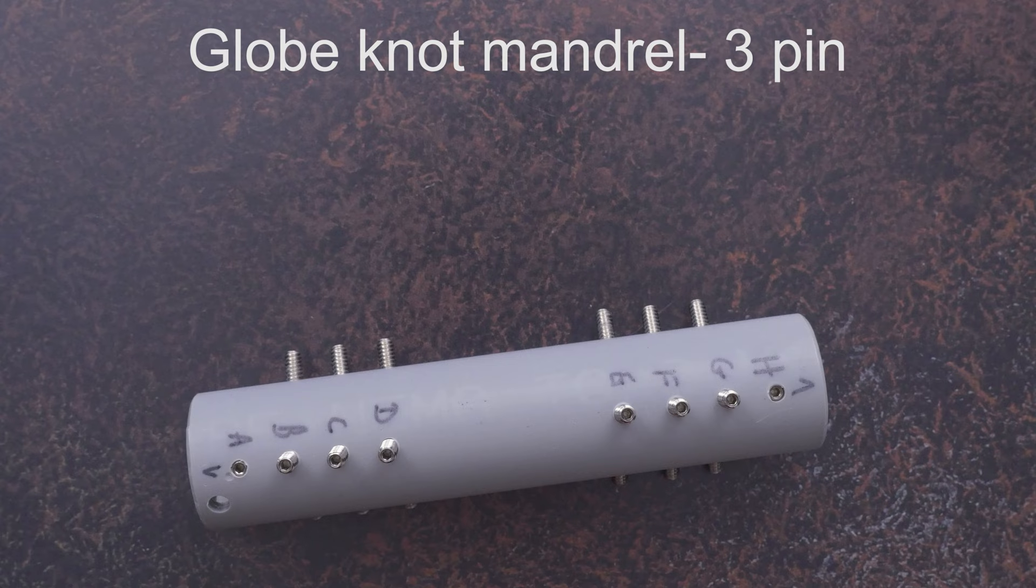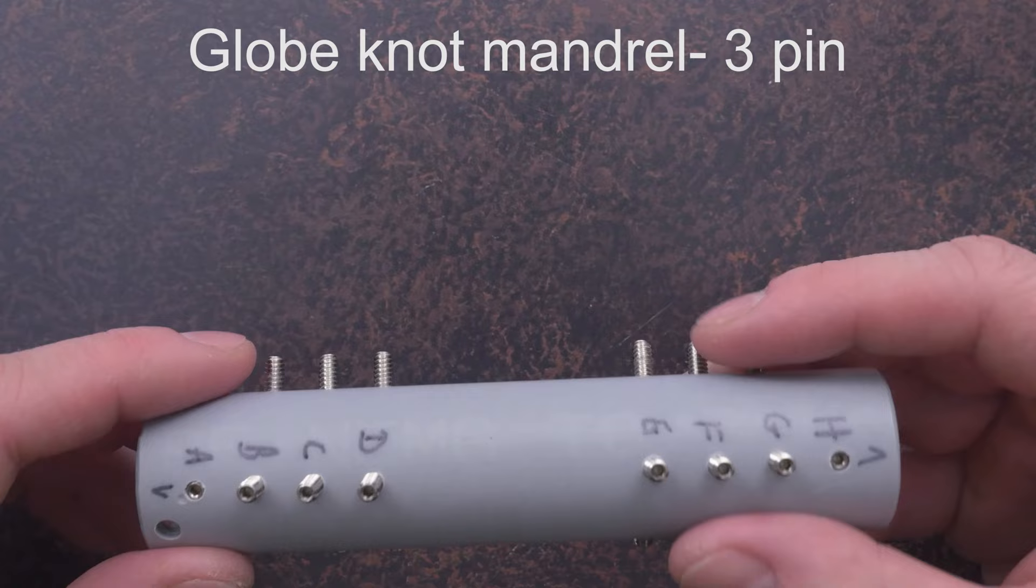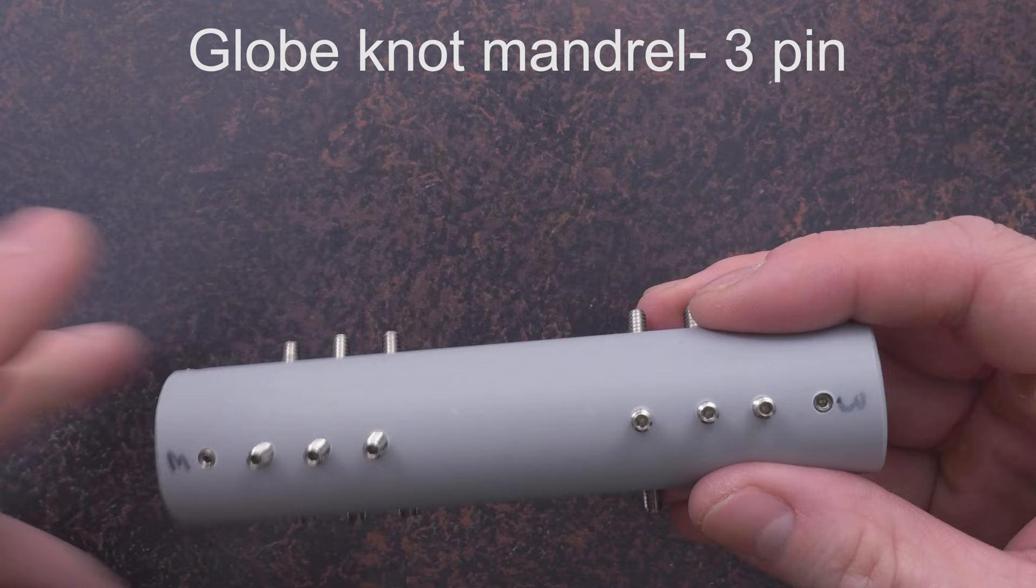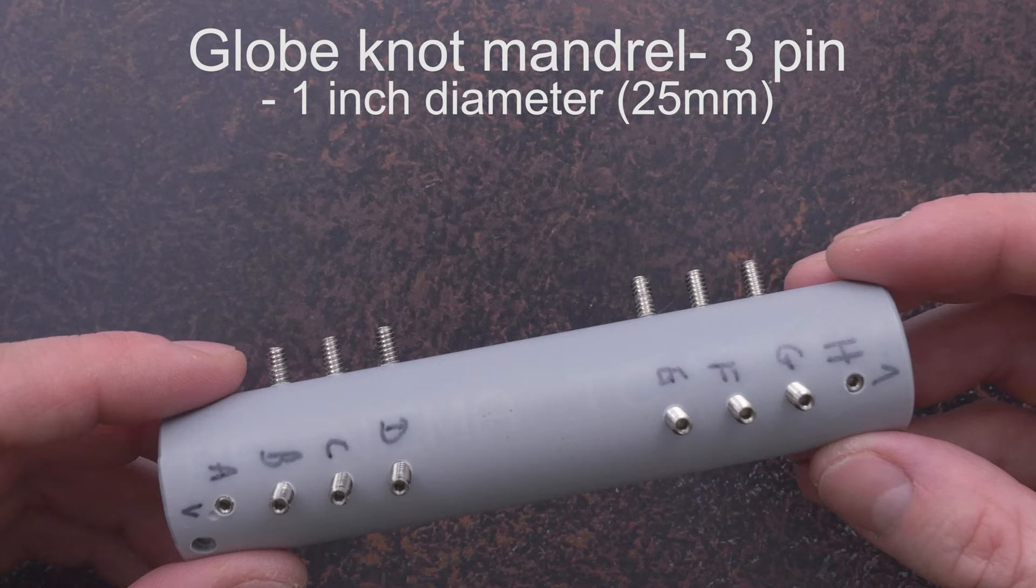The items needed to tie our knot are the following: a globenot mandrel with a 3-pin setup. So the mandrel has a total of 3 columns—one, two, three. The diameter of the mandrel is an inch.